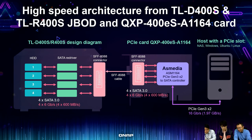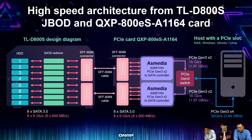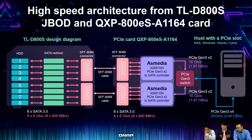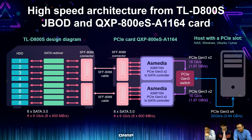The eight-bay model is almost twice the speed. The host interface is PCIe Gen 3 x4, giving 32 gigabit per second. The QXP-800ES card has a PCIe Gen 3 switch with two SATA controllers, each mapped to four SATA drives. The entire architecture allows the J-Bot performance between the J-Bot and host up to 32 gigabit per second.